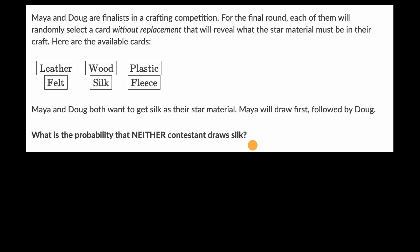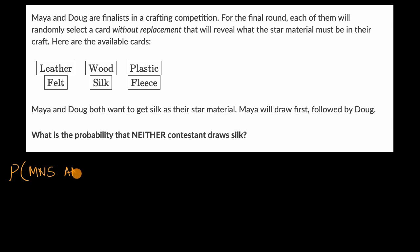Pause this video and see if you can work through that before we work through this together. All right, now let's work through this together. So the probability that neither contestant draws silk — the probability that Maya gets no silk and Doug gets no silk — that's just another way of saying: what is the probability that neither contestant draws silk?